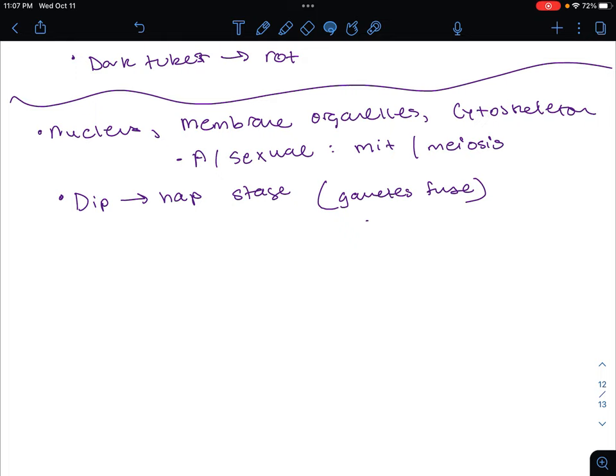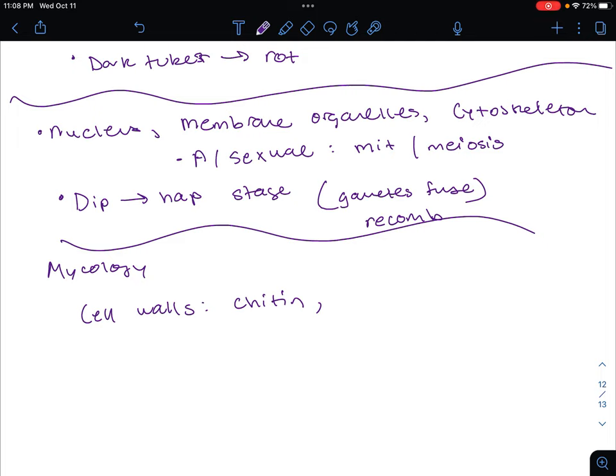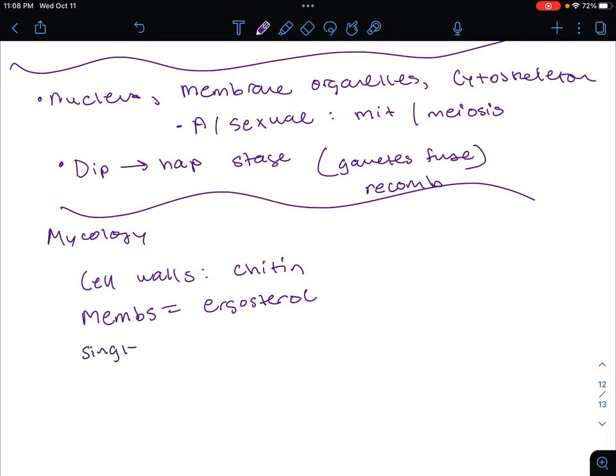Let's go into the content that will be tested on. We need to review what characteristics mark all eukaryotes. They have a nucleus, membrane-bound organelles, and a cytoskeleton. There could be asexual or sexual reproduction in the forms of mitosis or meiosis. Usually there's a diploid that becomes a haploid stage and vice versa.